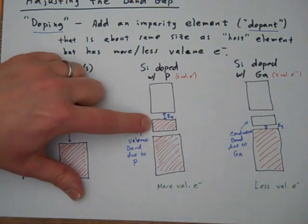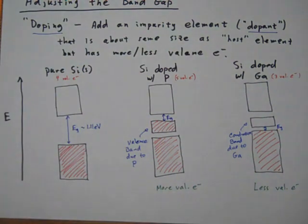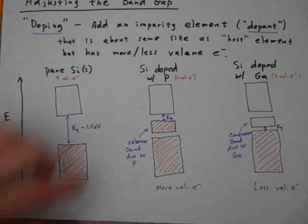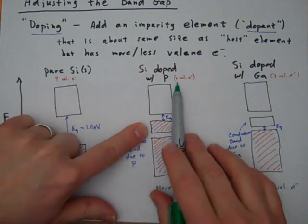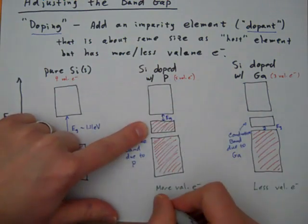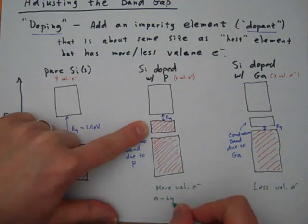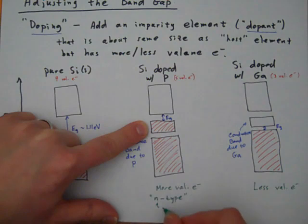So this band is now filled with some extra electrons that we've gotten from this phosphorus. And so this is the valence band due to phosphorus, and it's also filled. Now because we have more electrons, even though the substance is electrically neutral, we say that it has gotten more negative charges than it would normally have, five valence electrons instead of four. So because of the excess of negative charge, we call this an N-type semiconductor. N for negative.